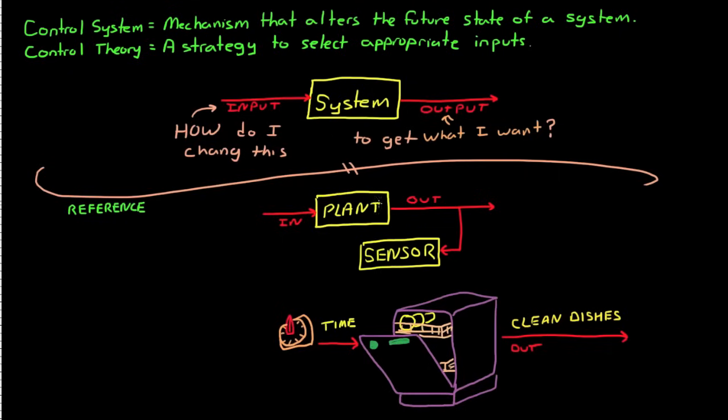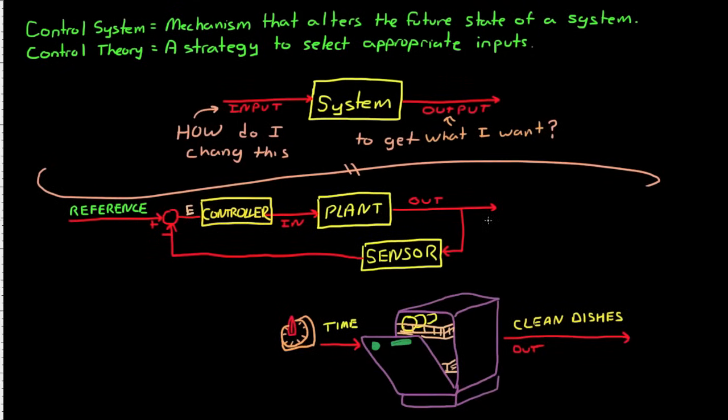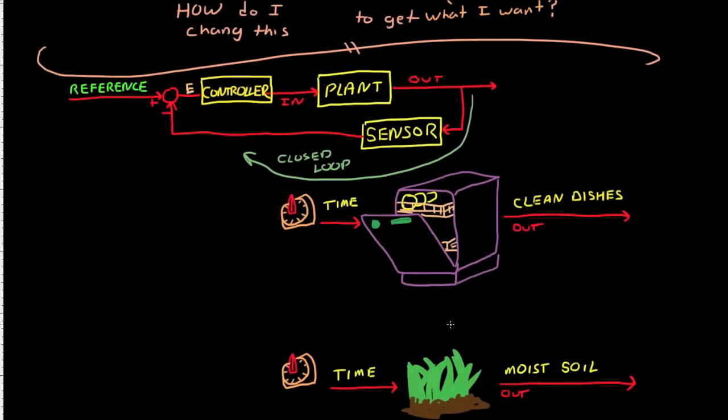In closed-loop control, you measure the output of the system with a sensor and compare the result against a reference signal. Often this is referred to as the desired state or the commanded state. An error term is generated and then fed through a controller where the error is converted into a system input value. When drawn in block diagram form, it's easy to see why this is referred to as a control loop. The negative part of the negative feedback control term is based on the comparator juncture where the feedback is subtracted.